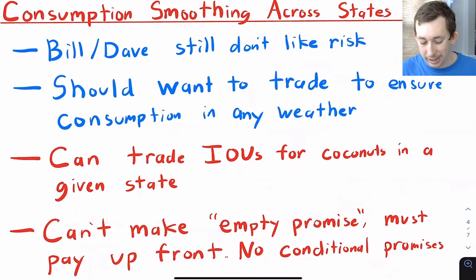So we're in Arrow-Debreu world so I can trade IOUs for coconuts in different states of nature as opposed to different time periods. It's going to work the same way. As before, I can't make empty promises. I can't say, oh yeah, I'll definitely pay you that coconut tomorrow.